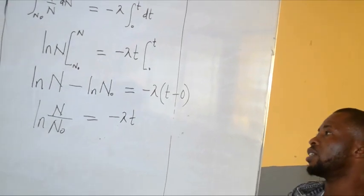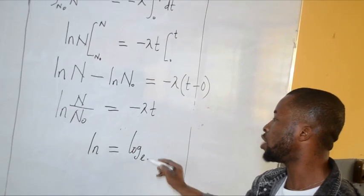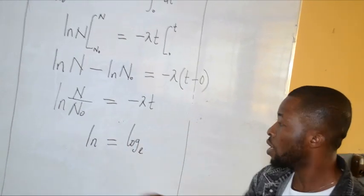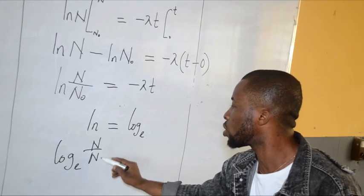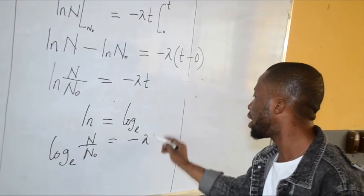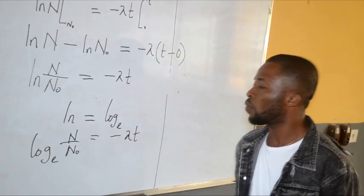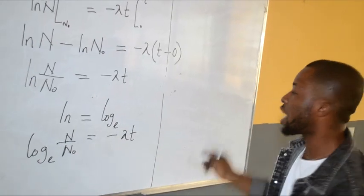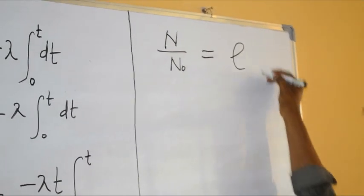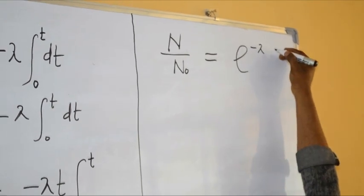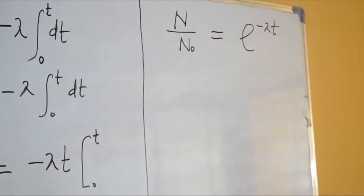So this is my relative formula. I can also use the fact that the natural log ln is equivalent to log base e. Moving the base to the right-hand side using log laws, you are left with N over N-naught equal to exponential raised to the power negative lambda t. So this is my decay formula. You can use it to solve many problems. But the question we've been asked is how to derive the equation for half-life.